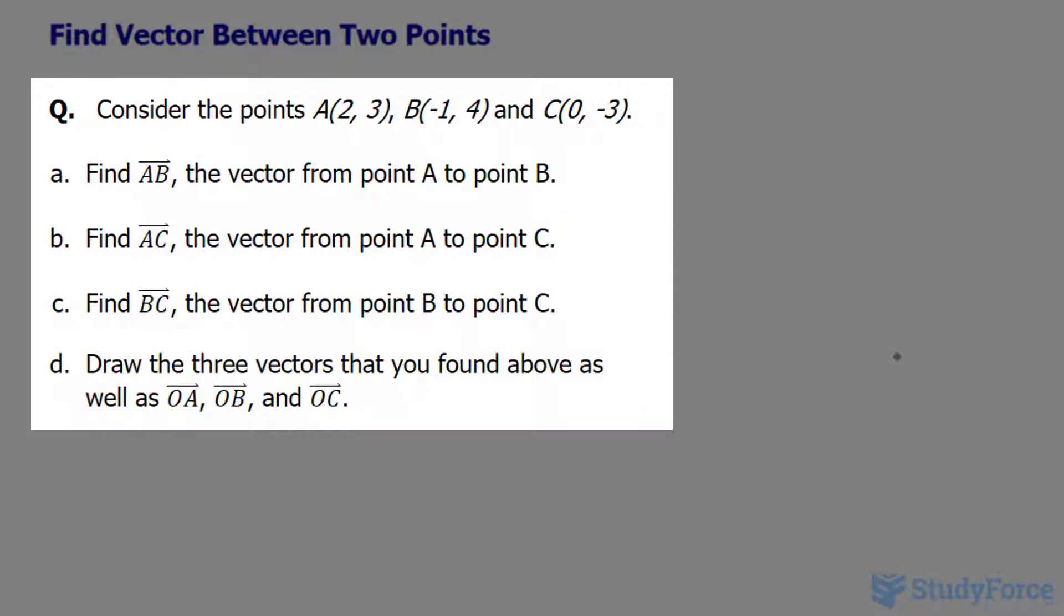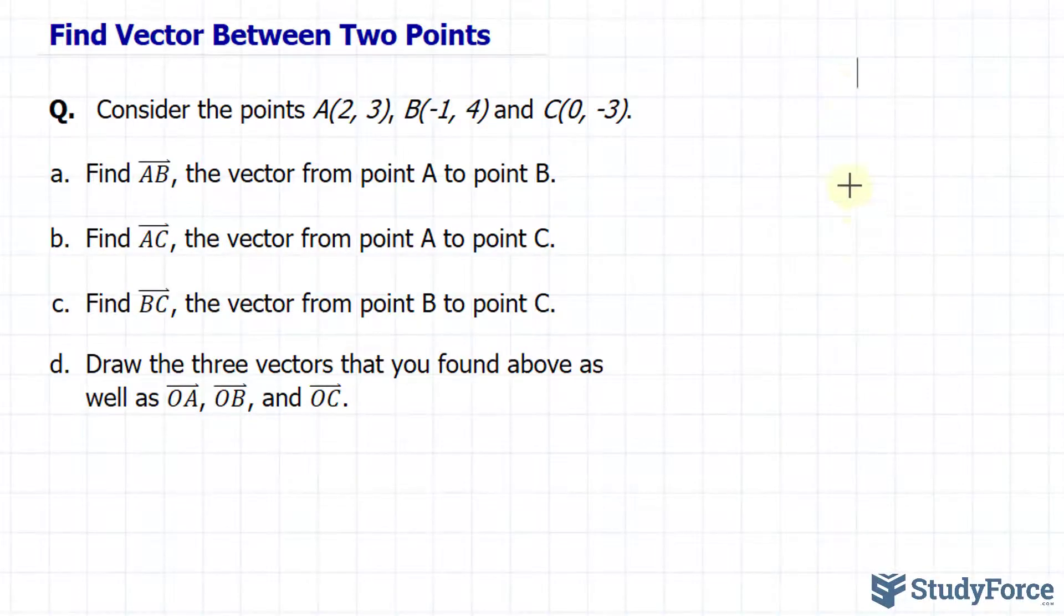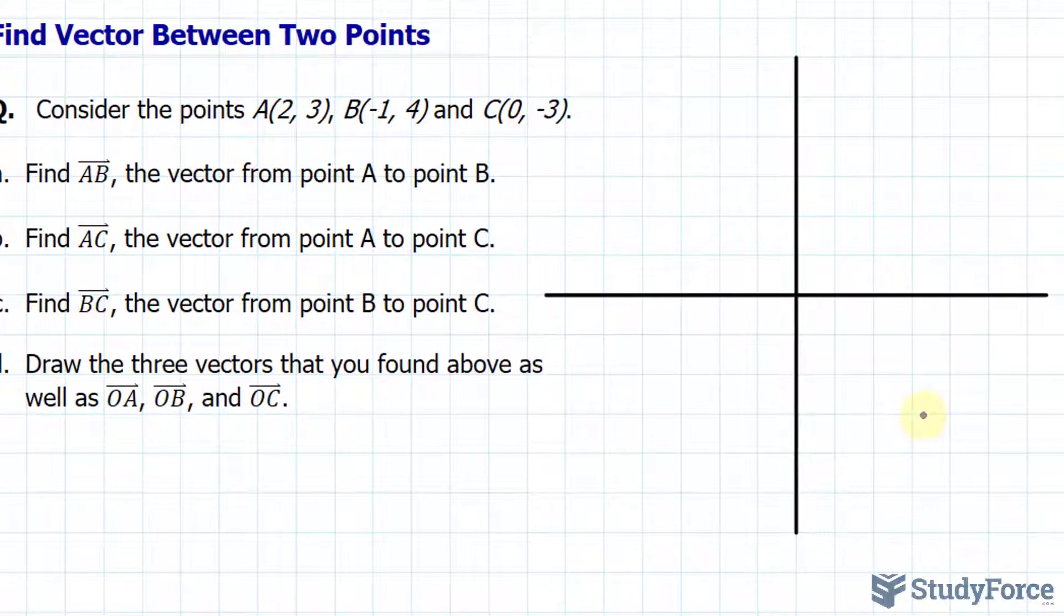Find the vector AB, which is the vector between points A and B. I want to start by creating a Cartesian plane to represent these three points. Here's my Cartesian plane.